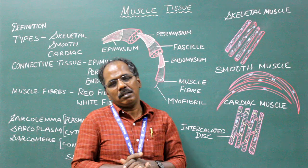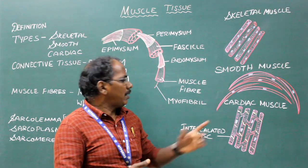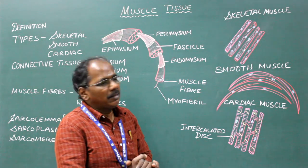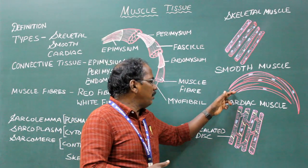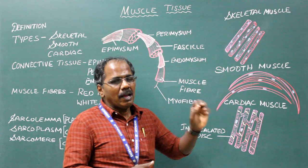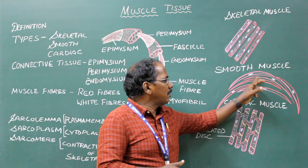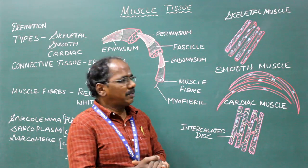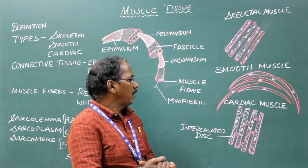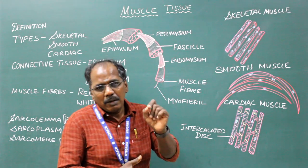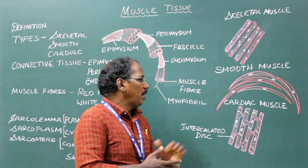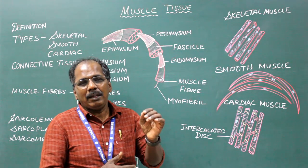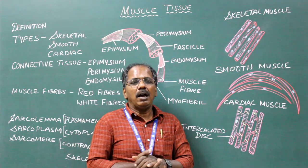Smooth muscle. It consists of spindle-shaped fibers. It is uninucleated and centrally placed. Absence of transverse striations. It is innervated by the autonomic nervous system. Examples: stomach, intestine, urinary bladder, and uterus.